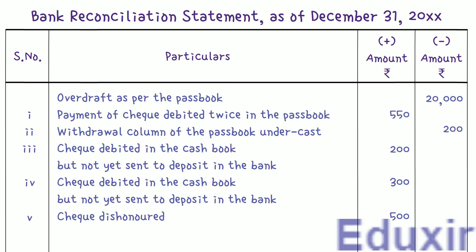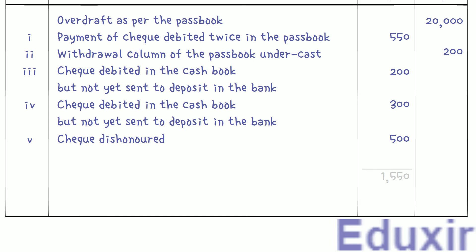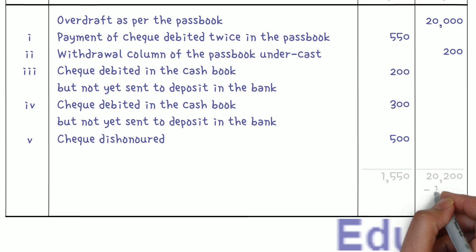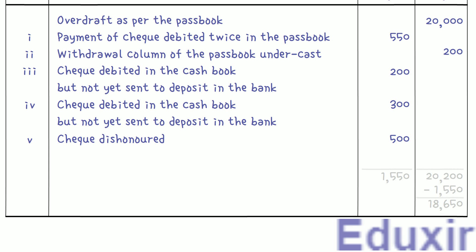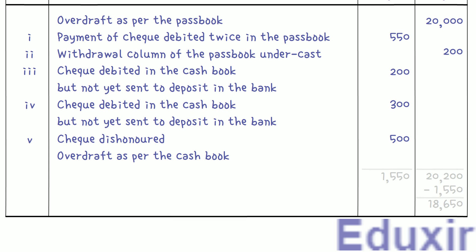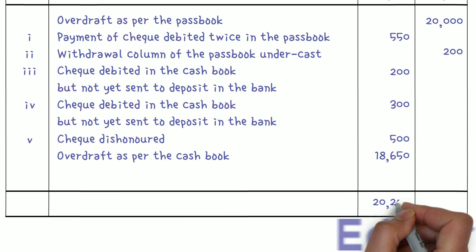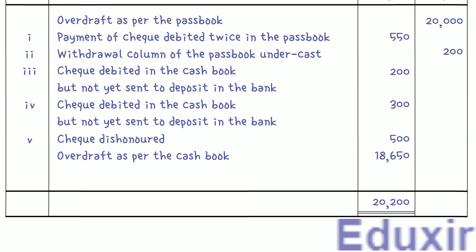We have completed the recording of all details into the bank reconciliation statement. The next step is to find the balance as per the cashbook. The total of all entries in the plus amount column is 1,550 rupees, and the total in the minus amount column is 20,200 rupees. Subtracting 1,550 from 20,200 gives 18,650 rupees, which is the cashbook overdraft balance. We write the particulars as 'Overdraft as per the cashbook' and enter 18,650 rupees in the plus amount column. The total of both columns is now 20,200 rupees, balancing the statement.